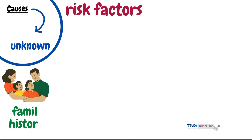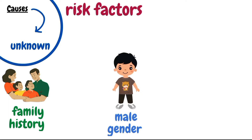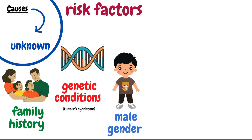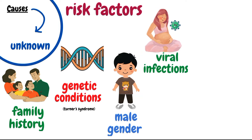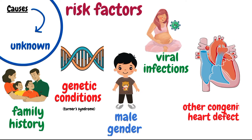The cause of coarctation of aorta is not known. However, some of the risk factors include family history of coarctation of aorta, male gender — it is more common in males than females — genetic conditions like Turner syndrome (around 10 to 25% of patients with Turner syndrome have coarctation of aorta), viral infections during pregnancy, and presence of other congenital heart defects such as ventricular septal defect, patent ductus arteriosus, and others.